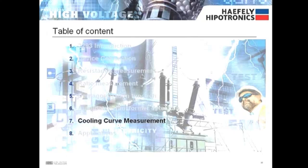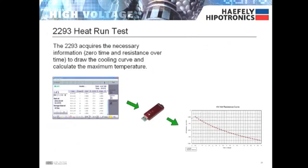Next is the cooling curve measurement. During a heat run test, the 2293 will acquire the necessary data to draw the cooling curve and calculate the maximum temperature. The data is stored as a CSV file for easy export via USB.